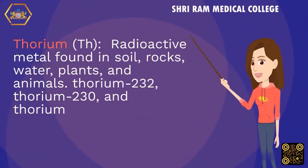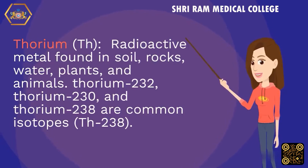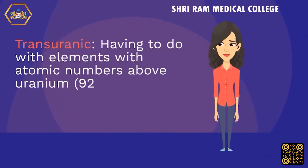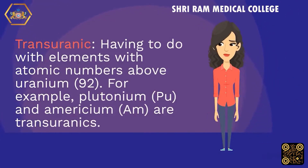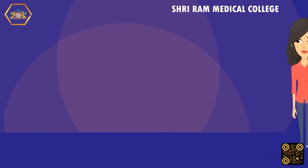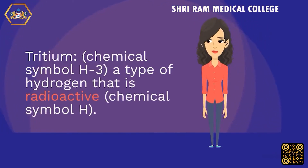Thorium (Th): a radioactive metal found in soil, rocks, water, plants, and animals. Thorium-232, Thorium-230, and Thorium-238 are common isotopes. Transuranic: having to do with elements with atomic numbers above uranium (92); for example, plutonium and americium are transuranics. Tritium (H-3): a type of hydrogen that is radioactive, chemical symbol H.